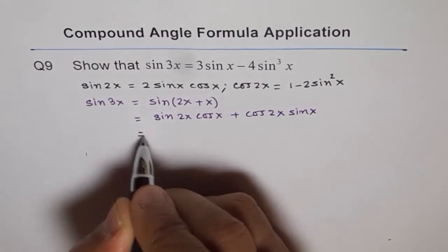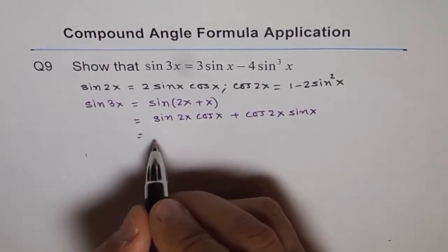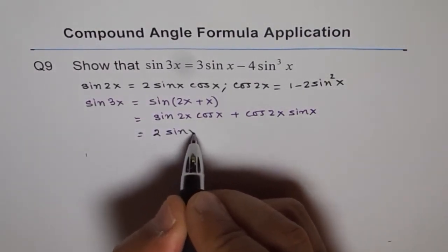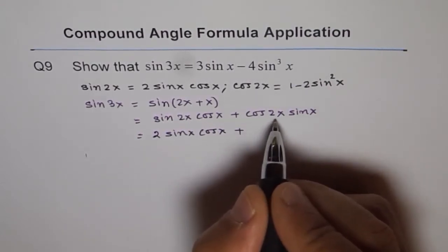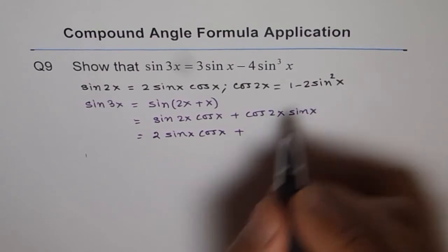Now, instead of sine 2x, I can use the formula and write 2 sine x cos x. And here, instead of cos 2x, I'll use 1 minus 2 sine square x.